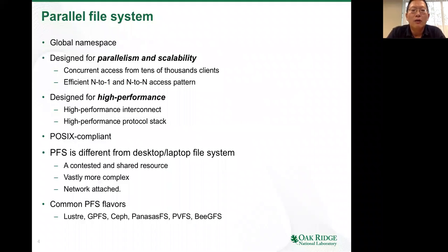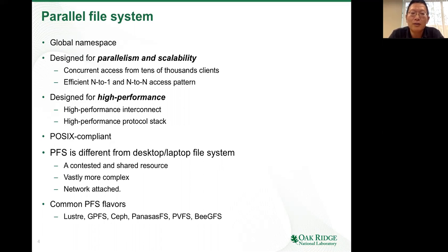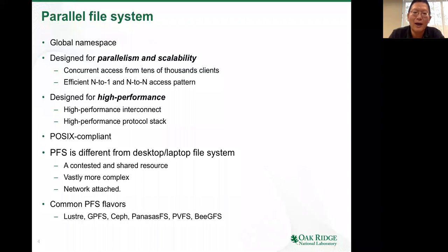PFS systems share a common set of characteristics. First, they usually support a so-called global namespace, meaning it doesn't matter which compute nodes are allocated in your job — when your application starts, it can see a consolidated and consistent view of the files and directories. The PFS is also designed with parallelism and scalability in mind, supporting concurrent access from tens of thousands of clients. It also supports N-to-1 and N-to-N access patterns. N-to-1 means N processes access a single file; N-to-N means N processes each access their own file.